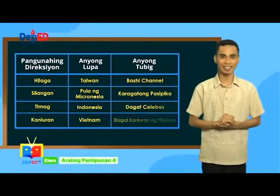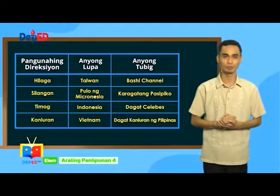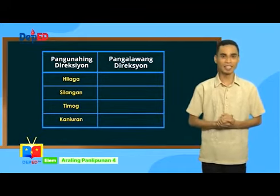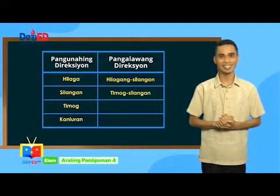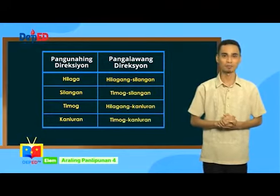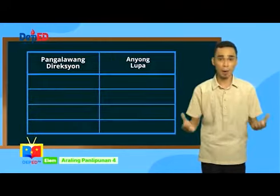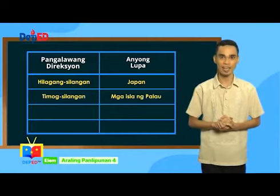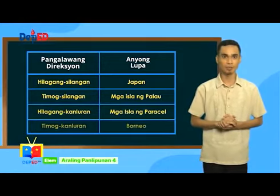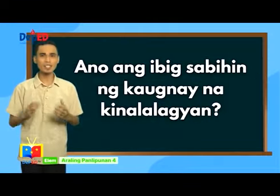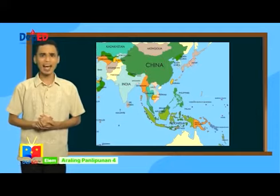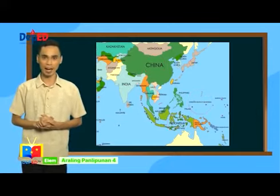Kung pangunahing direksyon ang pagbabatayan, ang Pilipinas ay napapaligiran ng mga sumusunod. Sa pagitan ng mga pangunahing direksyon ay ang mga pangalawang direksyon: Hilagang Silangan, Timog Silangan, Hilagang Kanluran at Timog Kanluran. Kung pagbabatayan ang mga pangalawang direksyon, matutukoy rin ang kinalalagyan ng Pilipinas: Japan sa Hilagang Silangan, mga isla ng Palau sa Timog Silangan, mga isla ng Paracel sa Hilagang Kanluran, Borneo sa Timog Kanluran. Ang relatibong lokasyon o kaugnay na kinalalagyan ng bansa ay ang lokasyon ng isang lugar ayon sa kinalalagyan ng mga katabi o kalapit nitong lugar.